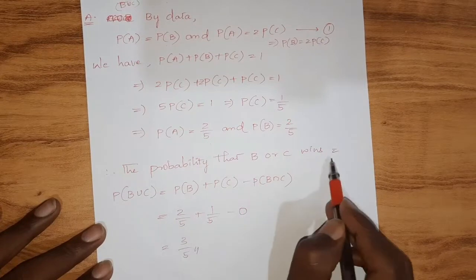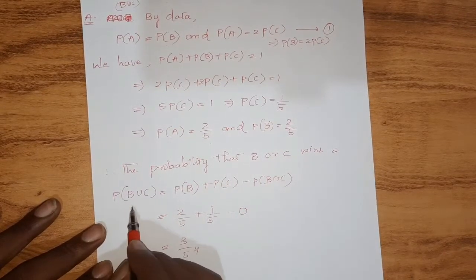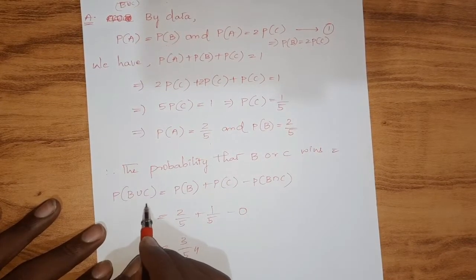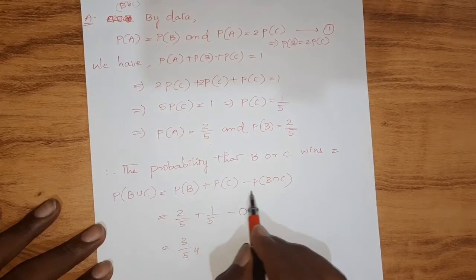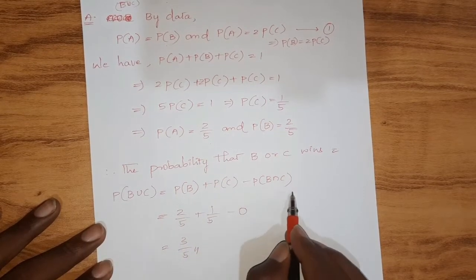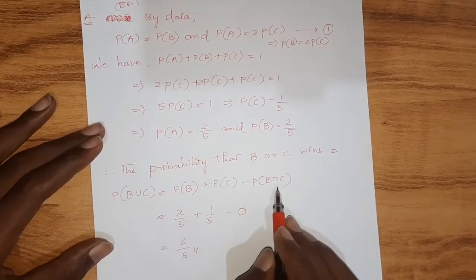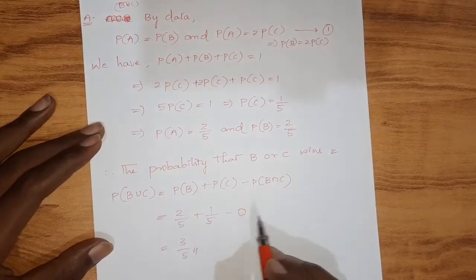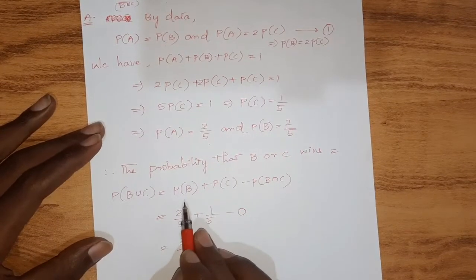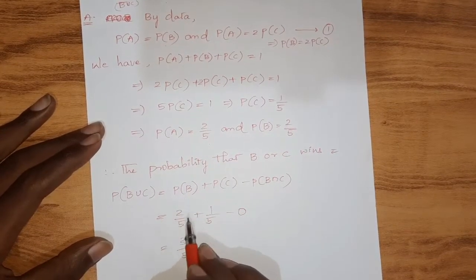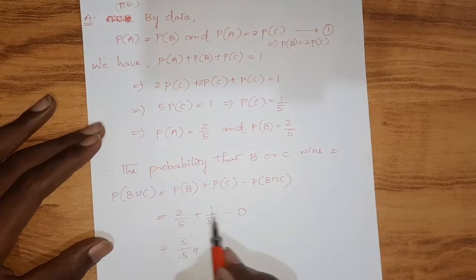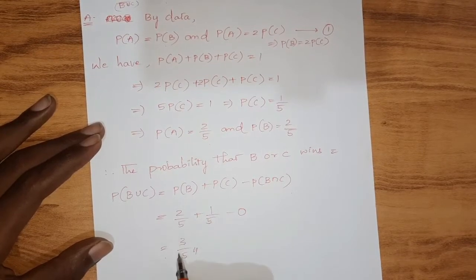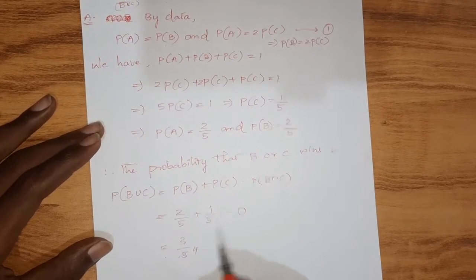We need P(B ∪ C) = P(B) + P(C) − P(B ∩ C). Since B and C cannot both win simultaneously, P(B ∩ C) = 0. Substituting: 2/5 + 1/5 − 0 = 3/5. Therefore the probability that B or C wins is 3/5.